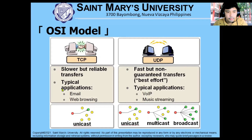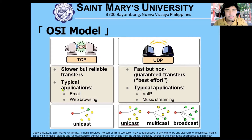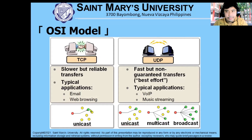TCP — transmission control protocol — means the communication is reliable, in which there is an acknowledgement from the receiver that the message has been received. Another concept is unicast communication, wherein from one sender there is only one receiver. Sender to receiver — that's the concept of unicast.